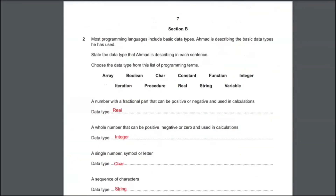Coming to the first question of section B, or the second question of this whole paper, since we are not going to see section A or the first question — it has been excluded. So the second question: most programming languages include basic data types. Ahmad is describing the basic data types he has used. State the data type that Ahmad is describing in each sentence — choose the data type for each description.